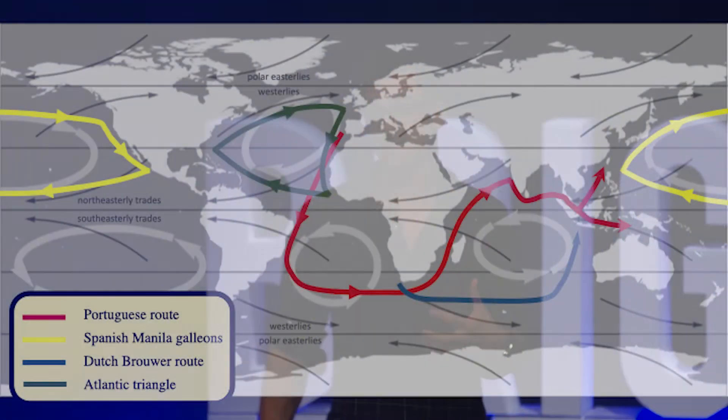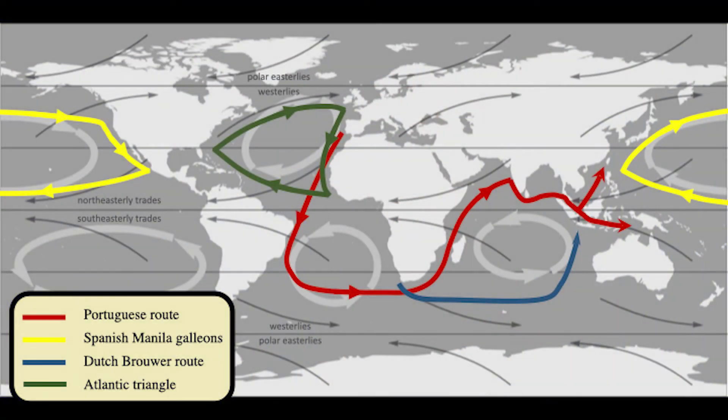Arguably, the most important trade route to the subsequent playing out of human history was the Atlantic Trade Triangle. This became established in the early days of the Industrial Revolution, when Britain and then the rest of Europe worked out how to get machines to do things for us.